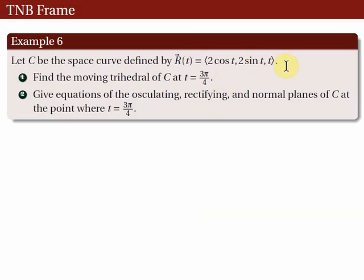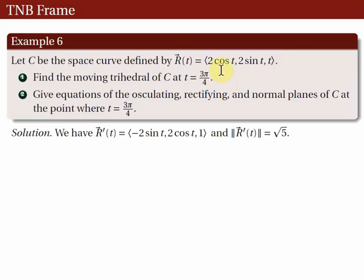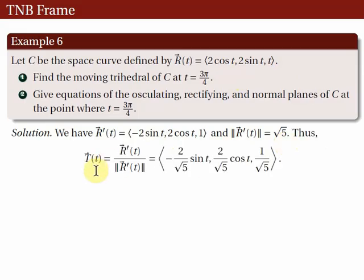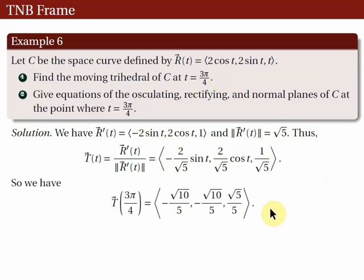From the vector equation R(t), let's first get R prime. R'(t) = (−2sin t, 2cos t, 1). Its norm is the square root of 4sin²t + 4cos²t + 1, which is just the square root of 5. So the unit tangent vector T, defined as R'(t) over the norm of R'(t), has components: first component over the norm, second component over the norm, and 1/√5. At t = 3π/4, we evaluate to get the unit tangent vector T.